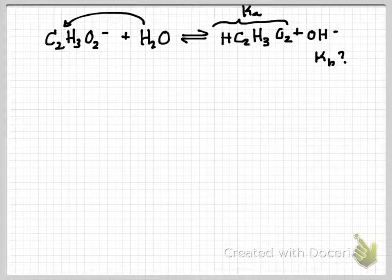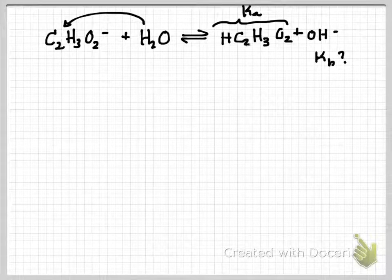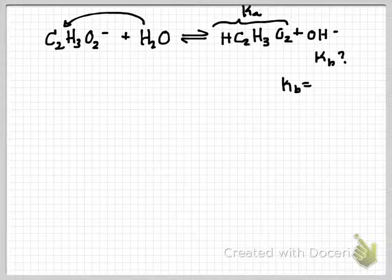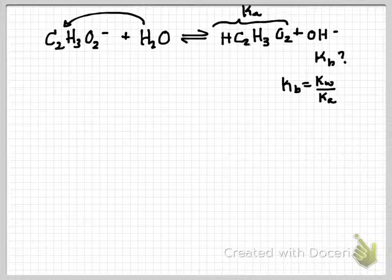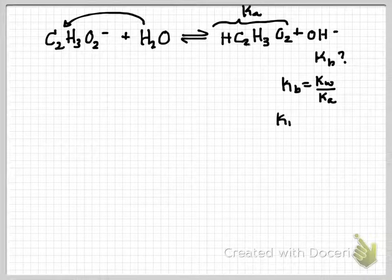And so we need to use our relationship with KW and solve KB equals KW over KA.